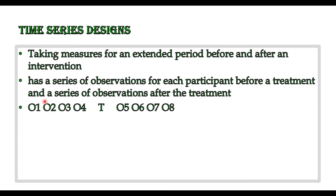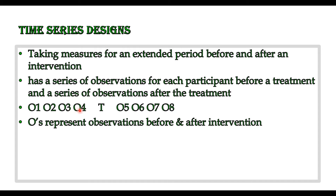The symbolic representation for time series design has the first observation, then the second, third, and fourth observation. These are the different pre-tests before our treatment. After taking different data before our treatment, we introduce the treatment (X) or the intervention program. Then after the treatment, we go for different post-tests: O5, O6, O7, and O8. This is how a time series design looks.